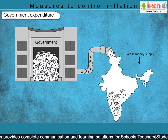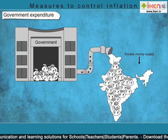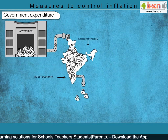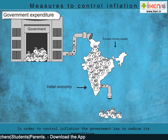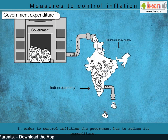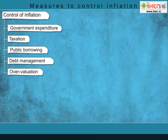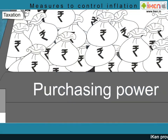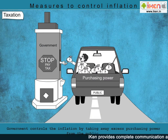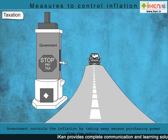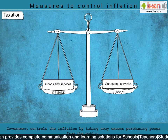Government Expenditure: The government releases money into the economy every time it meets its expenditure. Excess money supply in the economy fuels inflation. In order to control inflation, the government has to reduce its expenditure. Taxation: It is necessary to take away the excess purchasing power of the public through taxes. This helps to moderate the demand for goods and services to match with the supply. Increasing tax rates and imposing new taxes can control inflation to some extent.